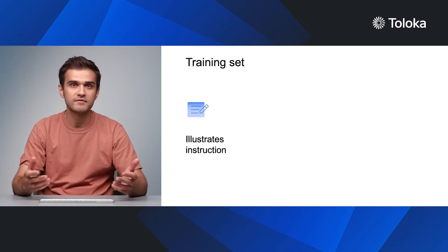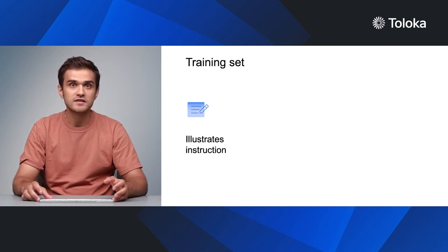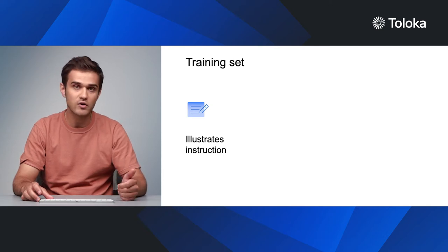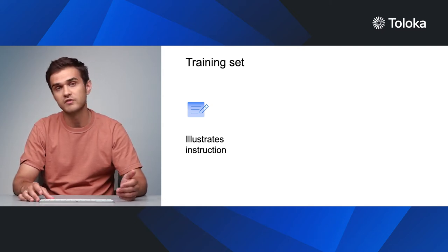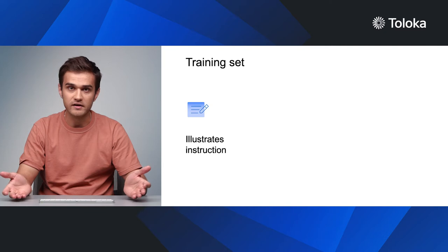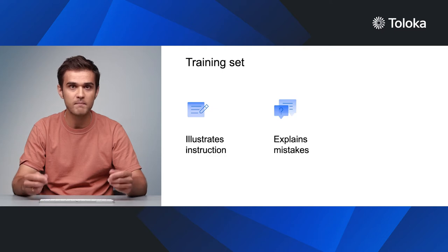Now that we have selected our potential performers, they need to be trained. Training involves a set of tasks with comments that performers will see when they give an incorrect answer. An effective training set should demonstrate all the guidelines from the instructions, even the simplest ones. You can use several examples for more complex guidelines. Explain why a given answer is correct or not — even better, reference a particular section of the instructions. This gives participants an extra reason to re-read and absorb the instructions, rather than click through the training as quickly as possible.